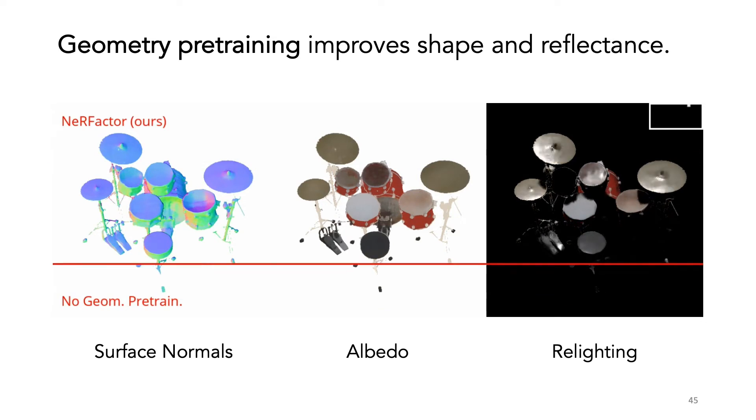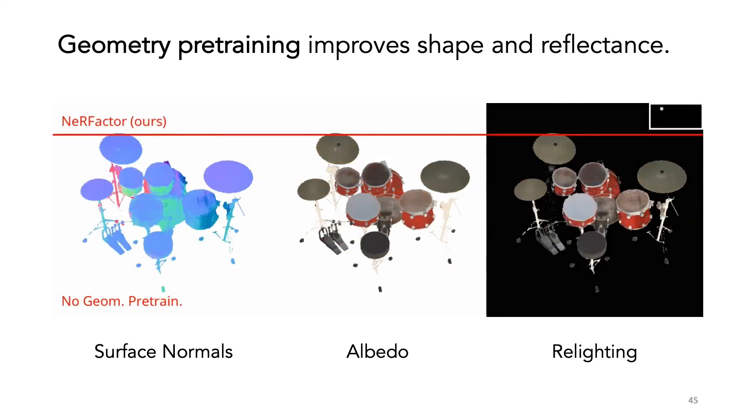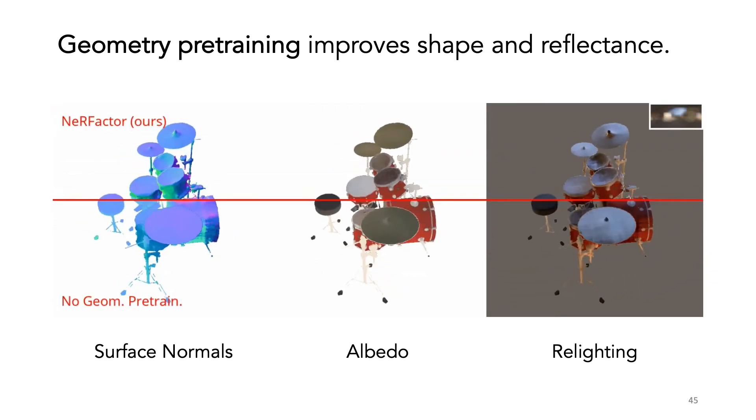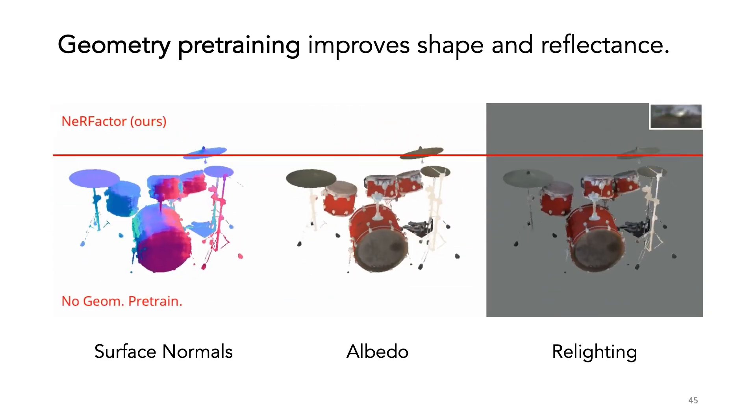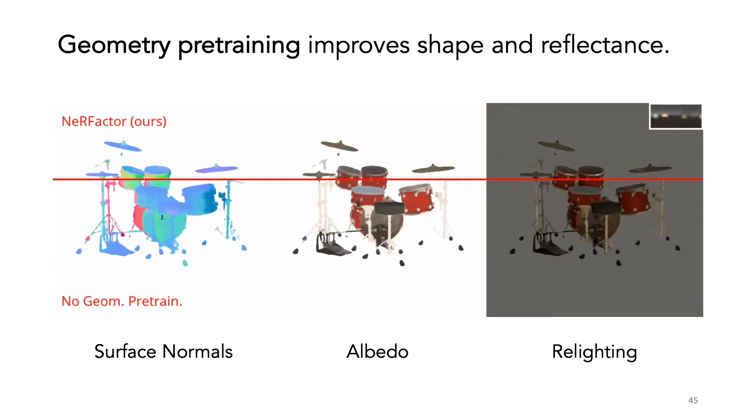We pretrained the normal and visibility MLPs to prevent the albedo and BRDFs from attempting to explain away shading and shadows. Here we show how this geometry pretraining improves both shape and reflectance.